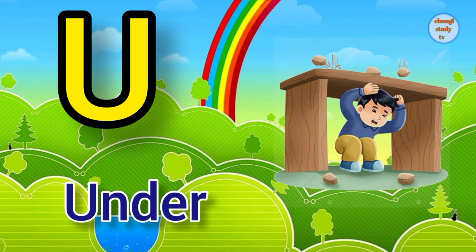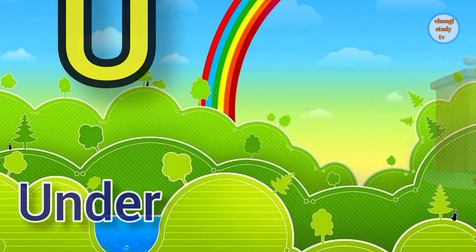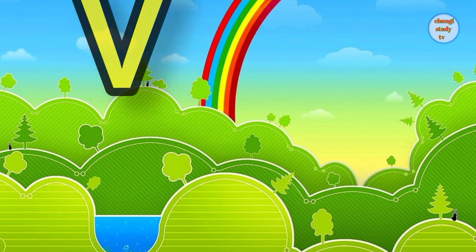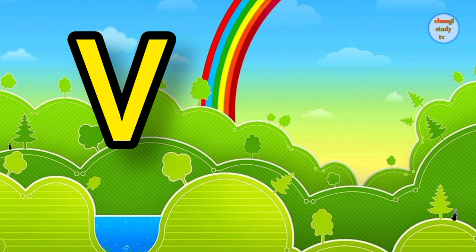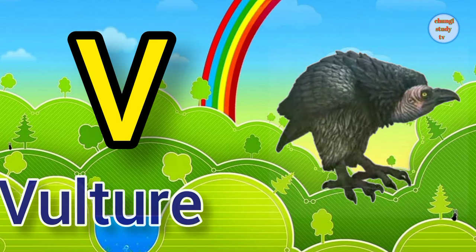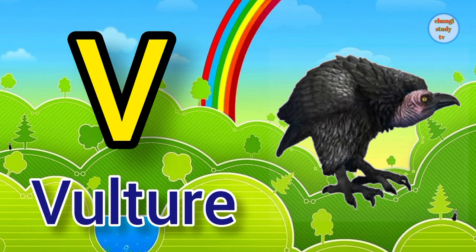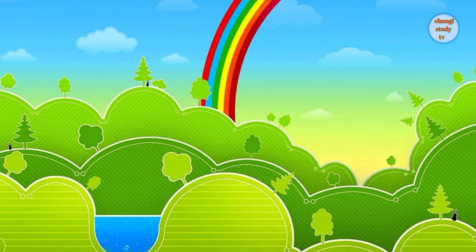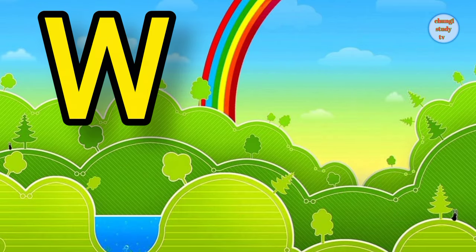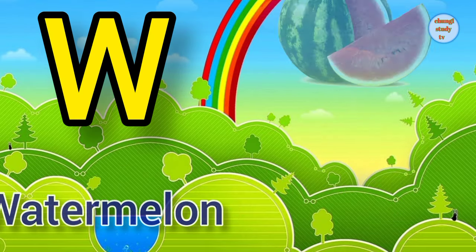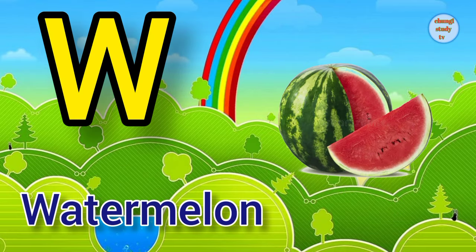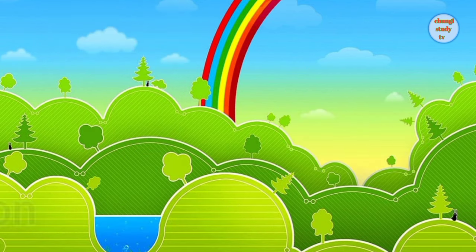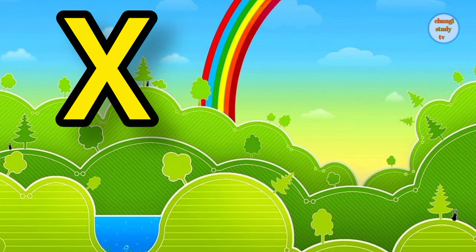U. U for under, under means neache. V. V for vulture, vulture means gith. W. W for watermelon, watermelon means tarbuj.